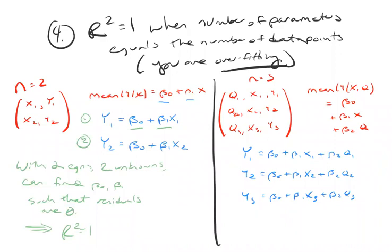So now I have three equations because there's three people in the dataset, but I've set this up so I also have three unknowns.